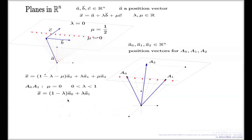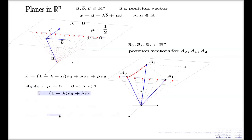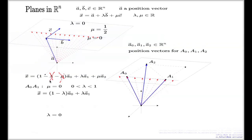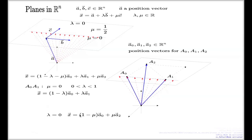You can do similar things for other sides. Setting λ=0 vanishes the b term and kills that contribution, giving parametrization of the line through a0 and a2 — a different line in convex form. By taking λ=0 you come up with the parametrization for the line a0a2.